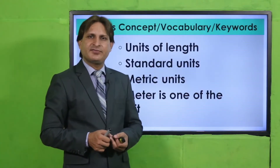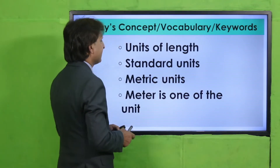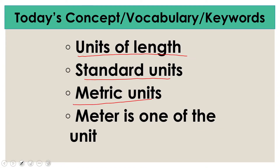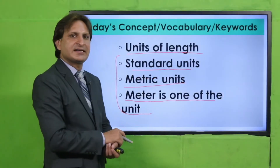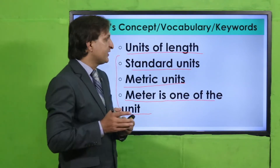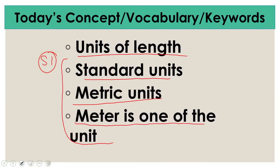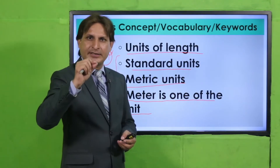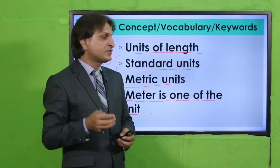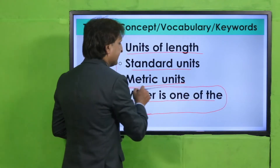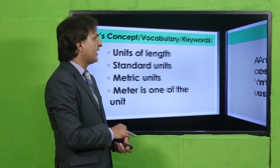Ab aajayen keywords ki taraf ya jo aaj ke concepts hain jinko hum log discuss karenge. Units of length dekhenge, standard units, metric units, aur meter is one of the units. Humne basically teen units discuss kiye hain jo standard metric units hain. SI unit bhi inko bolte hain — Standard International unit — jo duniya mein har jagah use hote hain: meter, centimeter, aur kilometer. Yeh teenon units use hote hain, aur aaj ke lesson mein meter par focus hai.